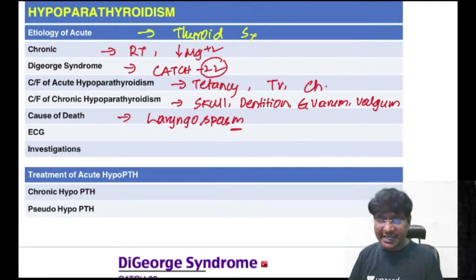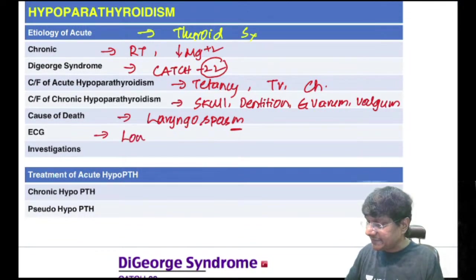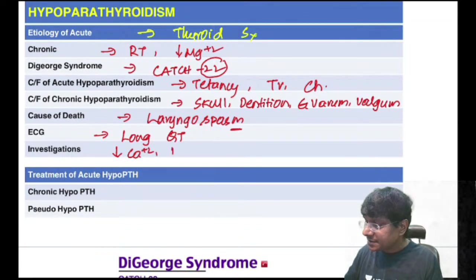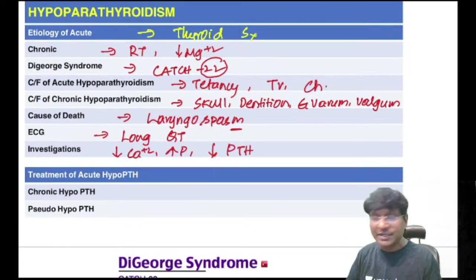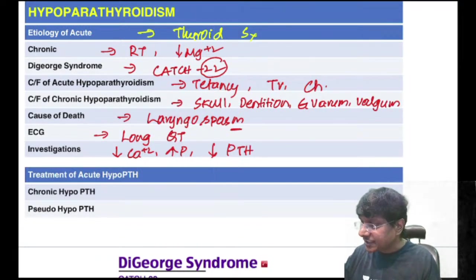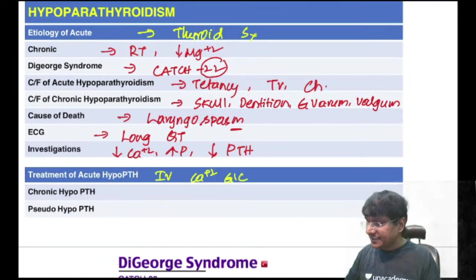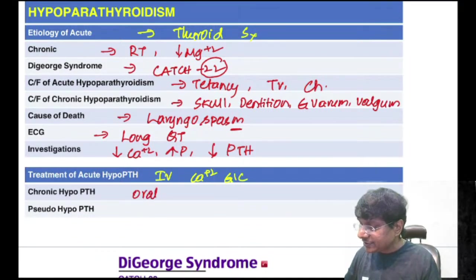Chronic hypoparathyroidism features similar to vitamin D deficiency: softening of skull, delayed dentition, bony abnormalities (genu varum = bow-shaped legs, genu valgum = knock knees). Investigations: reduced calcium, elevated phosphorus, elevated PTH levels. Treatment: acute — IV calcium gluconate; chronic — oral calcium gluconate or vitamin D.